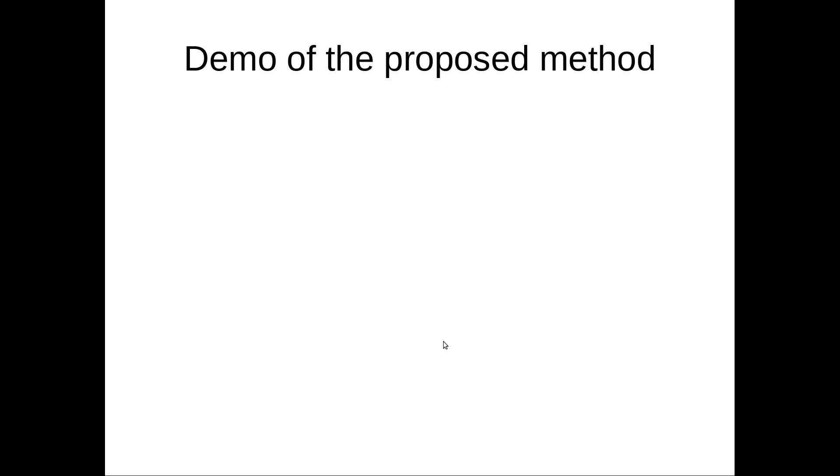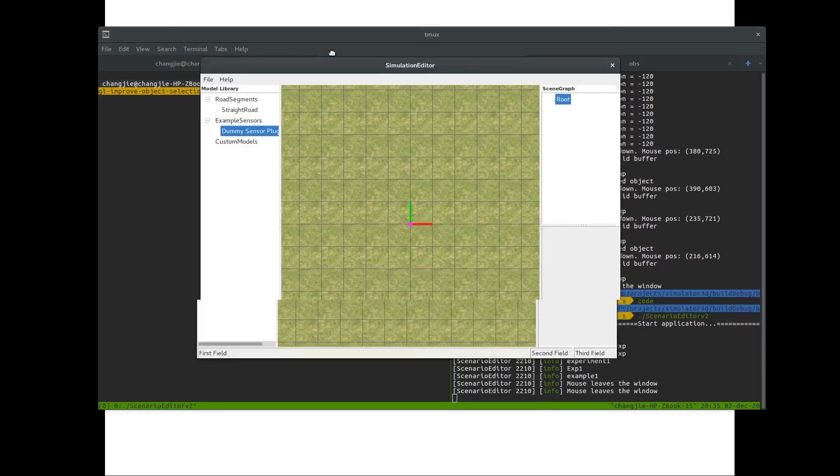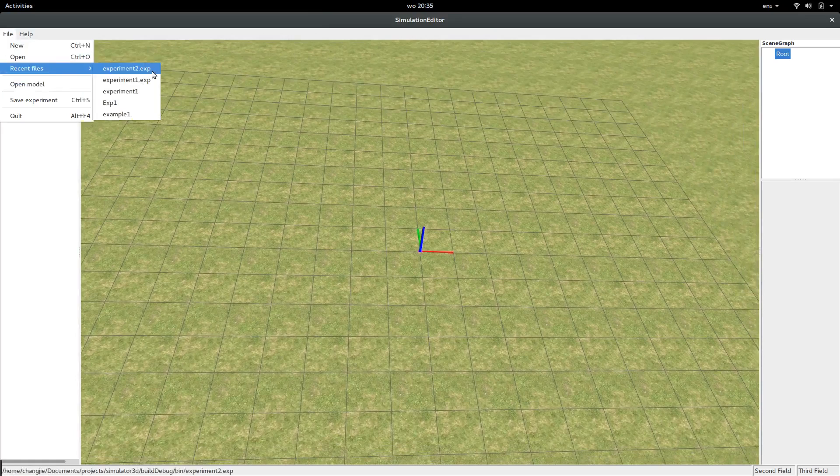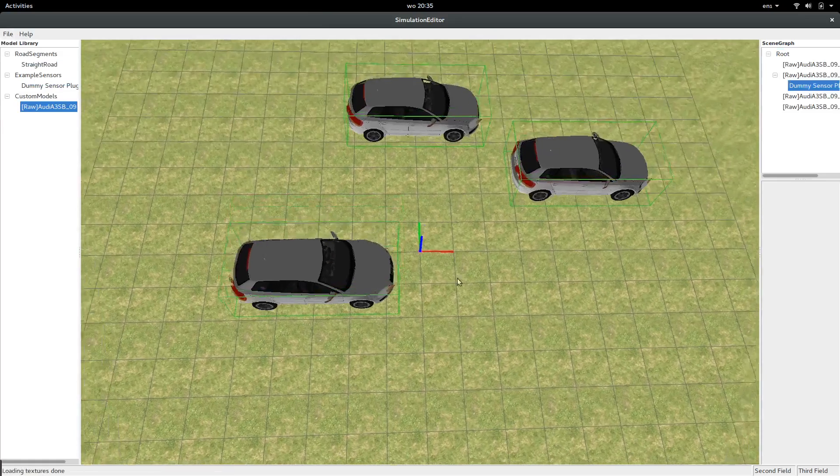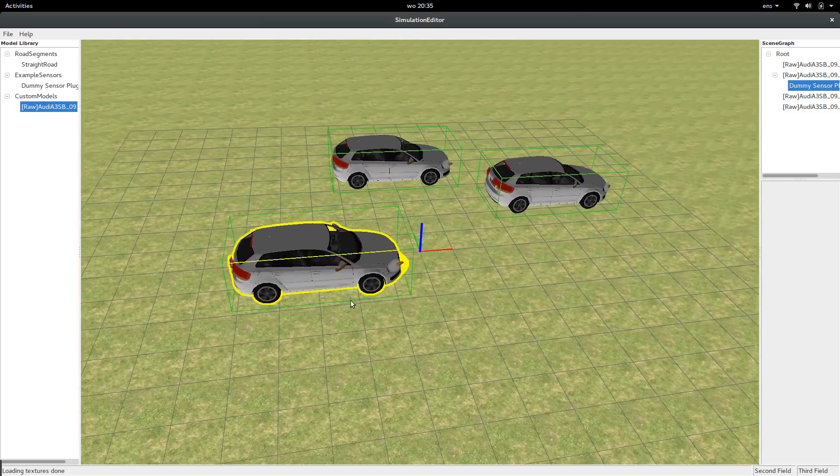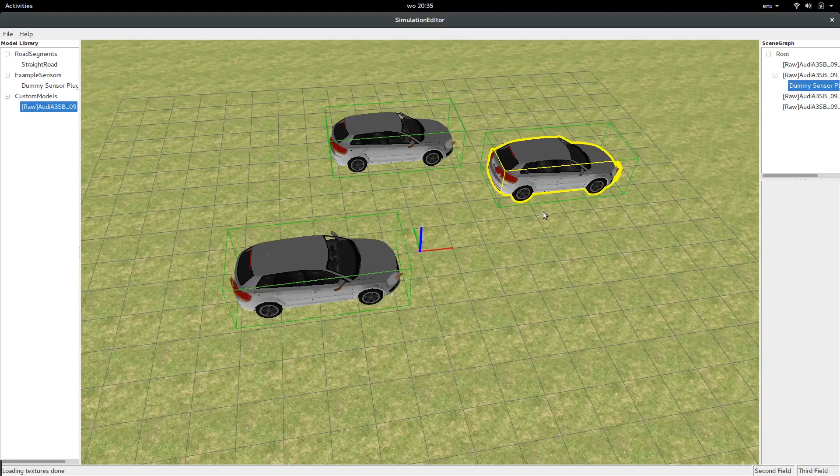Now I want to show you the demo of the proposed method. It's the same scenario with the three objects. Now you can select the object. Now if you look at the selected object, the borders have the same thickness.